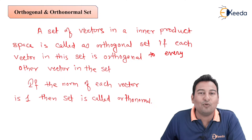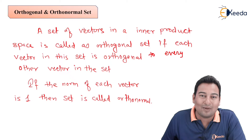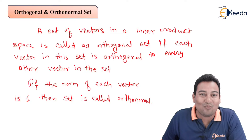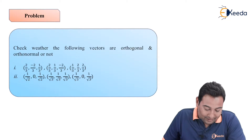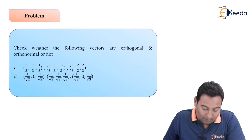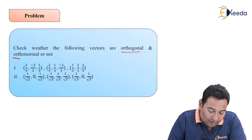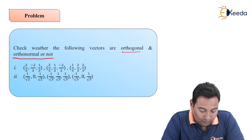For orthonormal, we are going to find out the norm of each vector, and if all the norms are 1 then it is orthonormal. Let us see with the help of an example. This is the given problem and we need to check whether the vectors are orthogonal and orthonormal or not.